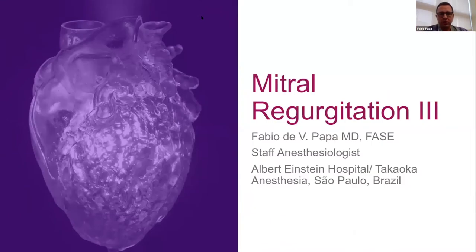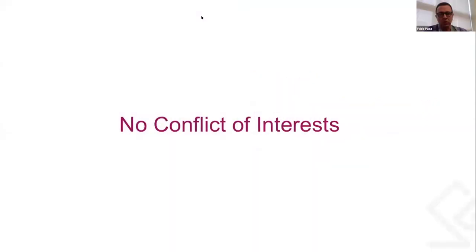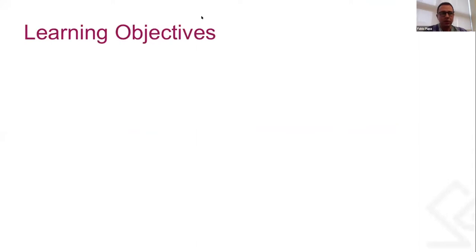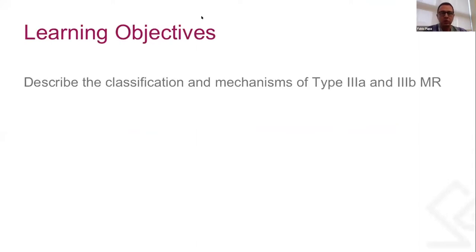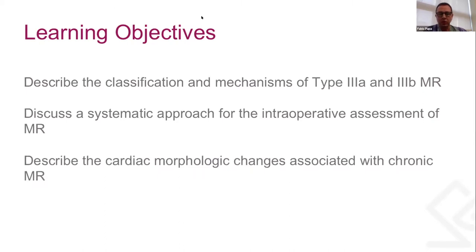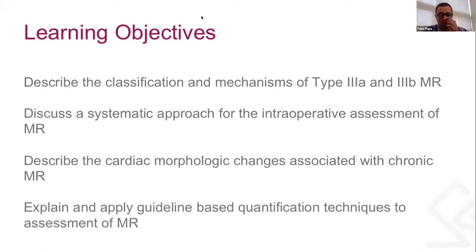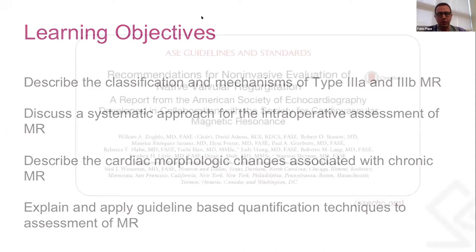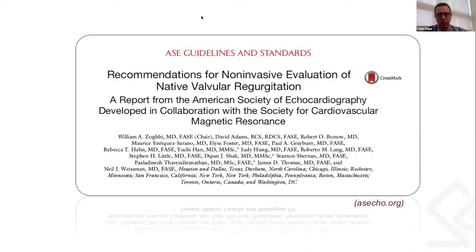The topic of this presentation is Type 3 mitral regurgitation. There are no conflicts regarding this topic. In the next 25 minutes, I would like to describe the classification and mechanism of Type 3 mitral regurgitation, discuss a systematic approach for the intraoperative assessment of mitral regurgitation, discuss some morphological changes related to chronic mitral regurgitation, and apply the 2017 ASC guidelines to quantify Type 3 mitral regurgitation.